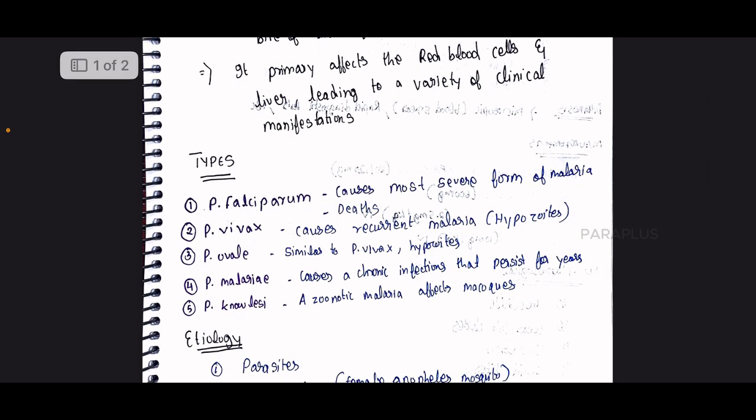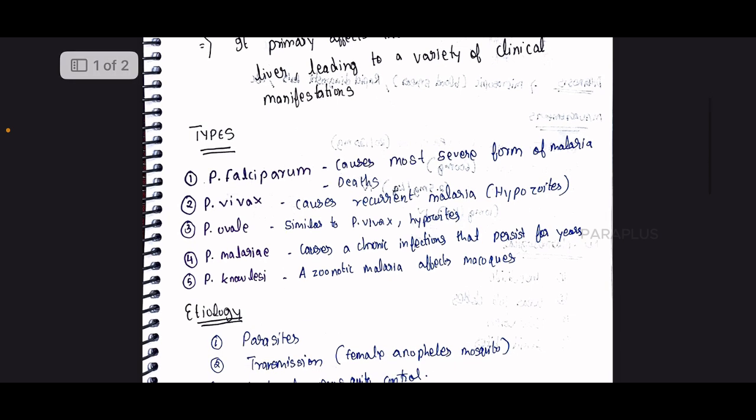Plasmodium falciparum causes the most severe form of malaria and can lead to death. Plasmodium vivax causes recurrent malaria through hypnozoites. Plasmodium ovale is similar to Plasmodium vivax and also causes recurrent malaria through hypnozoites.